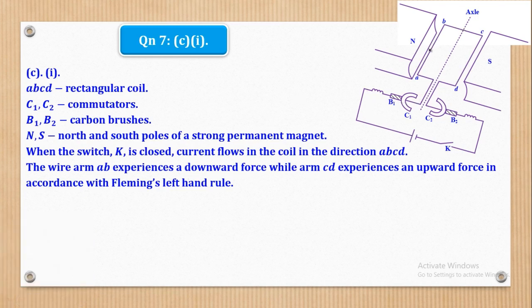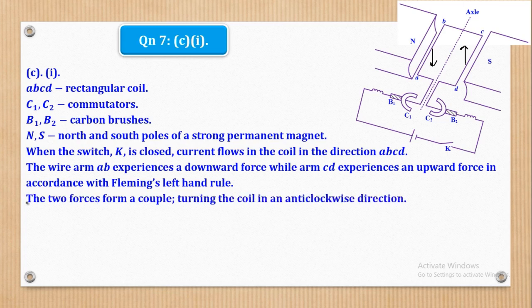So the wire arm A, B experiences a downward force while the wire arm C, D experiences an upward force and that is in accordance to Fleming's left hand rule. Now, that we shall say that the two forces form a couple turning the coil in an anti-clockwise direction. So remember a couple is this: these are two equal and opposite forces whose lines of action never meet. So in this case, they form a couple and that couple makes the coil to rotate in an anti-clockwise direction like that.